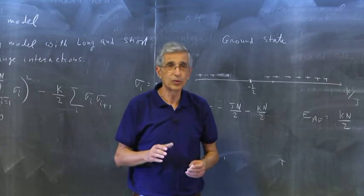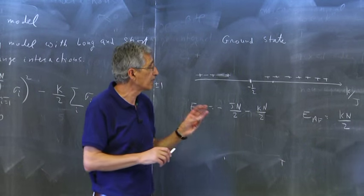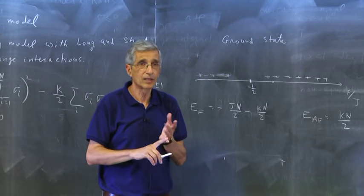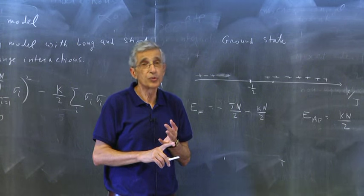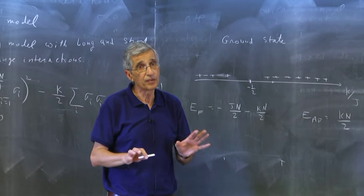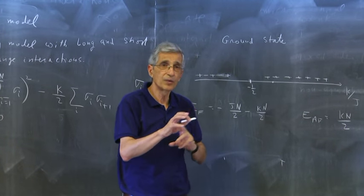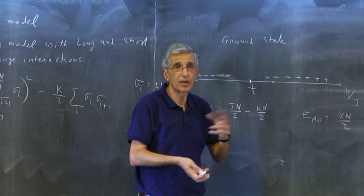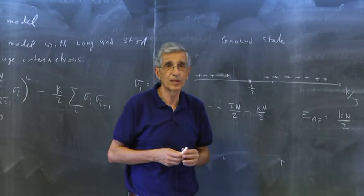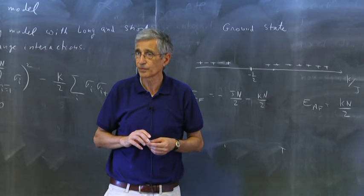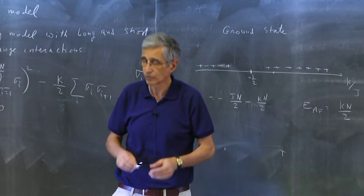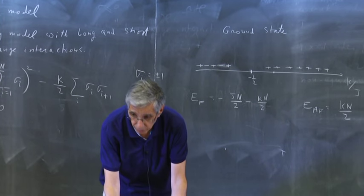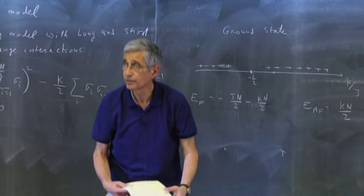What I want to do next time is solve this model in the canonical ensemble, solve it in the microcanonical ensemble, show you that you get very different phase diagrams, demonstrate negative specific heat, and show how things combine when you do that.